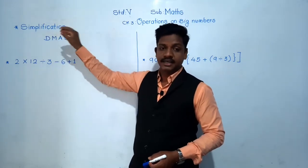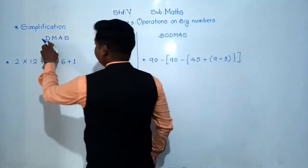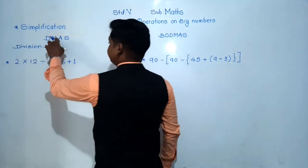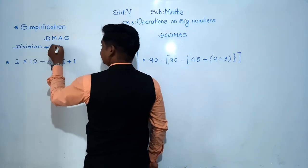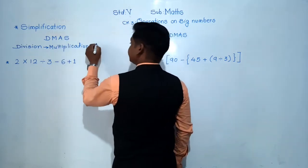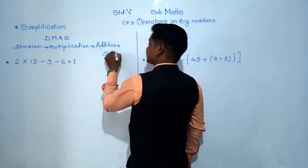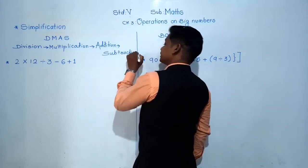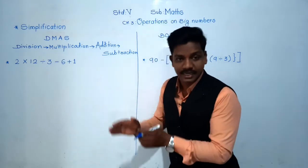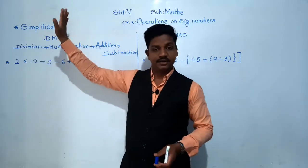DMAS — can you guess the full form? D for Division, M for Multiplication, A for Addition, and S for Subtraction. So when all four operations, or any combination of them, are present in one example, we use DMAS to determine the sequence in which to solve them. The question will simply say 'Simplify.'